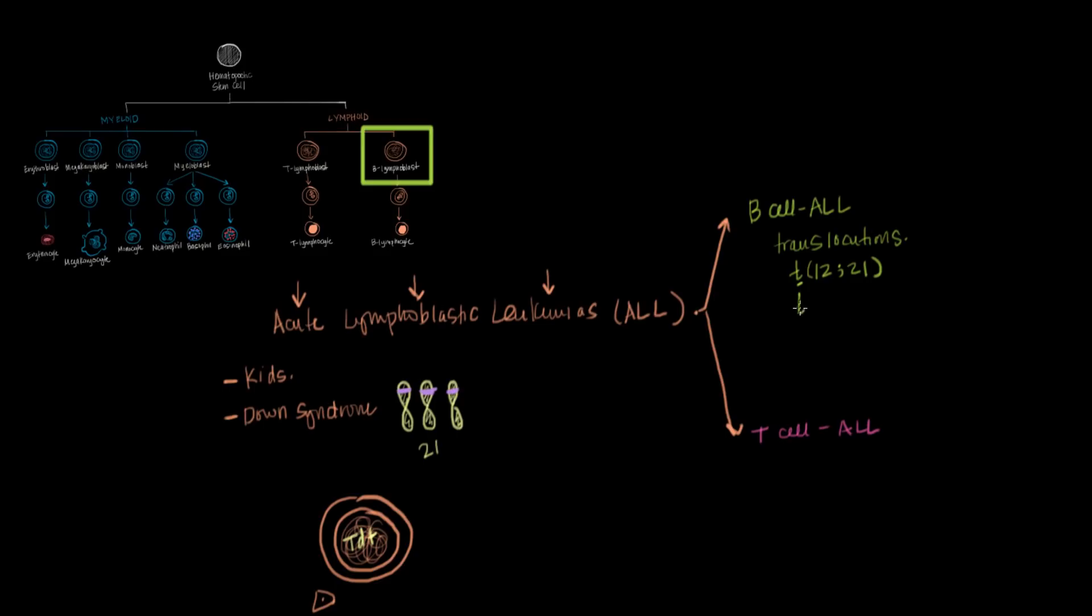And the second type is a t(9;22) translocation. And the t(12;21) is usually found in kids who have B-cell ALL and the t(9;22) is usually found in adults who have B-cell ALL.